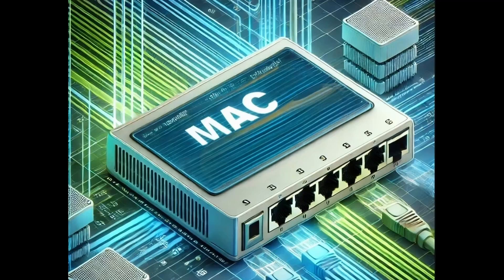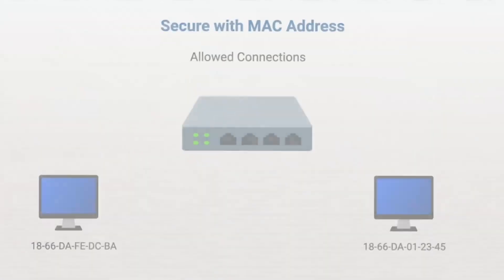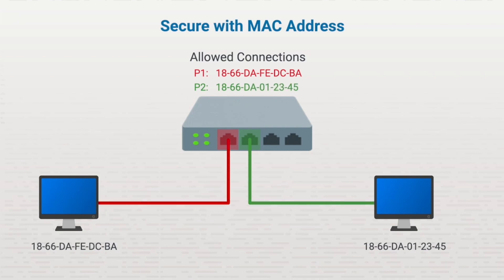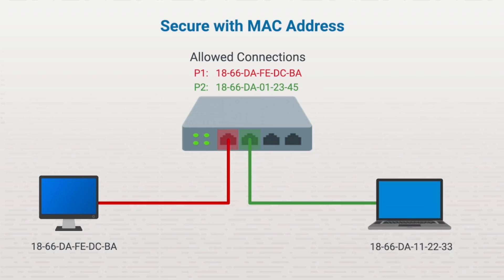You can also configure switch ports to only accept connections from specific MAC addresses. For example, let's configure port 1 for the MAC address ending in BA, and port 2 for the MAC address ending in 45. Assuming the devices connected to those ports match the required MAC address, they're allowed to connect. While this is a good defense, it's difficult to maintain and very simple to defeat if one device is swapped out for another.